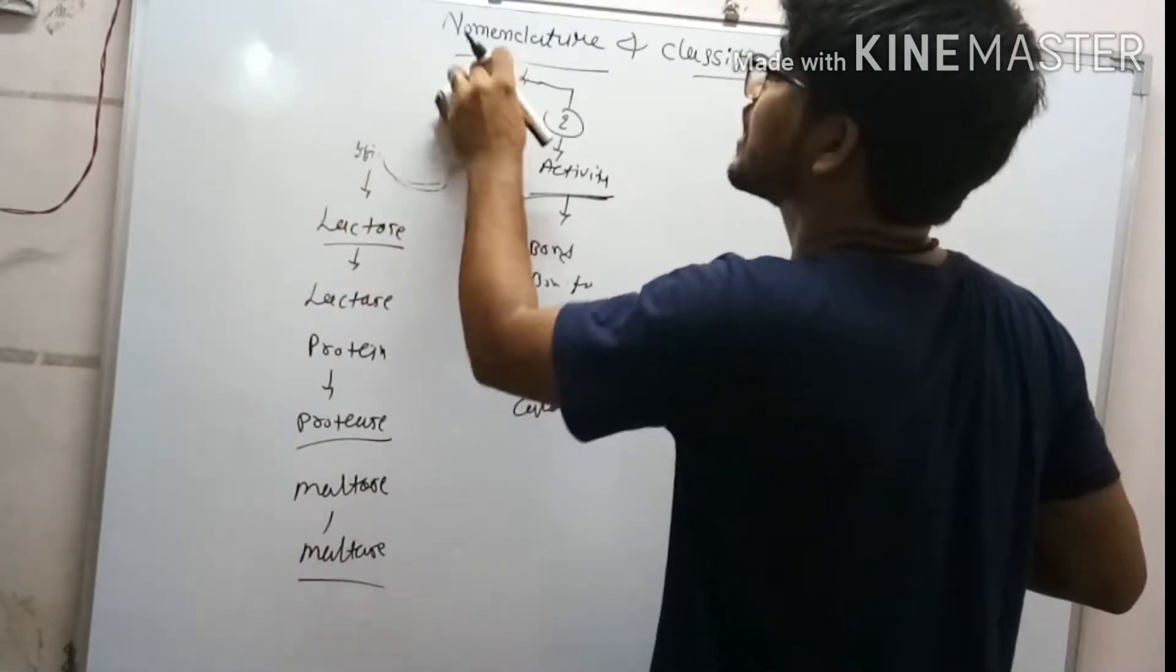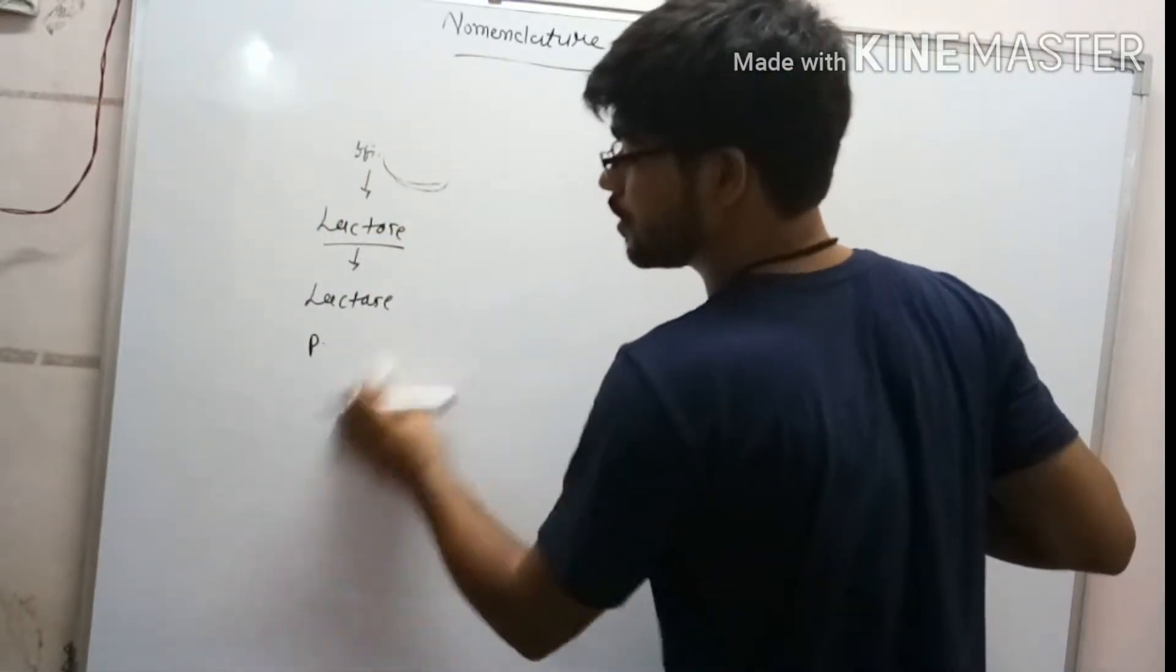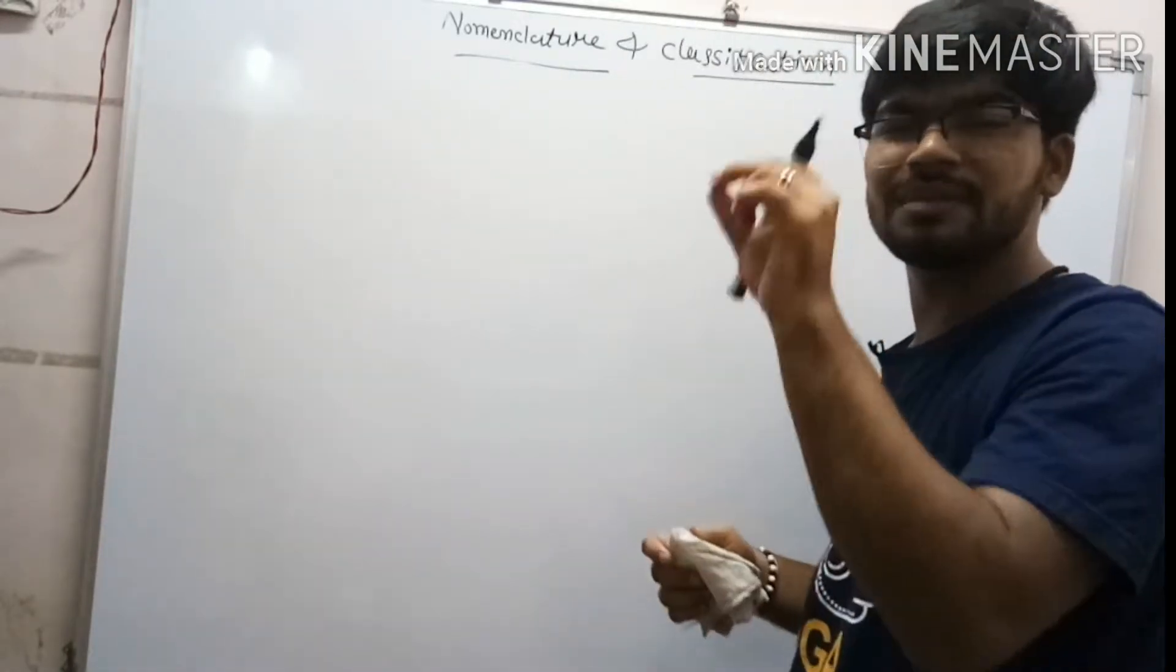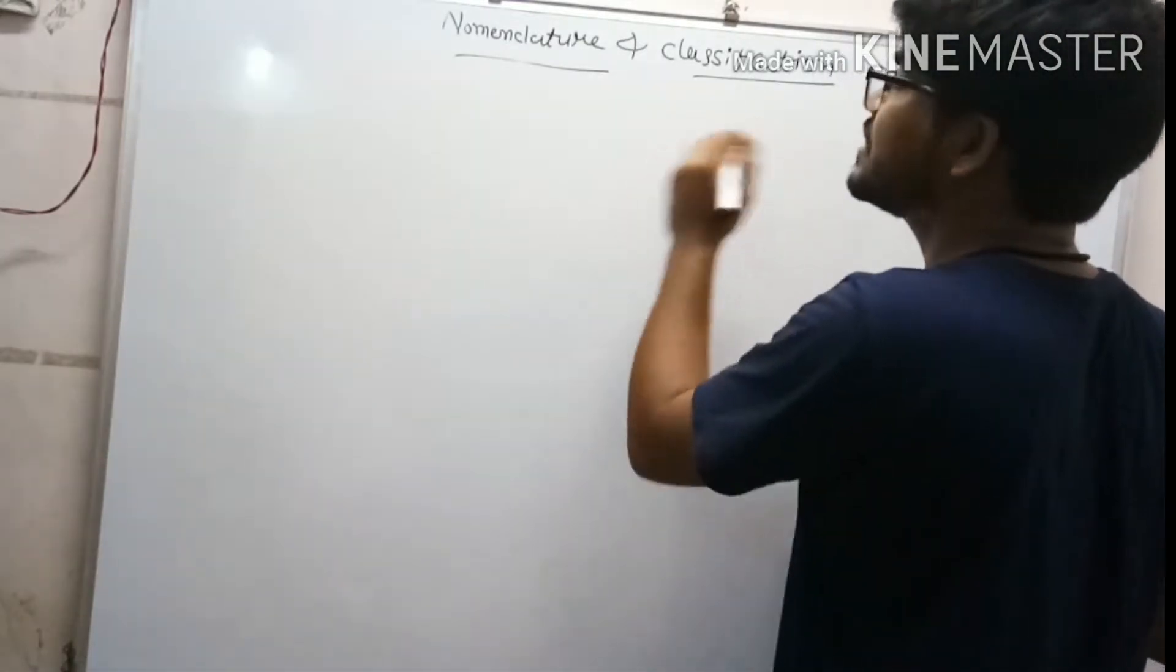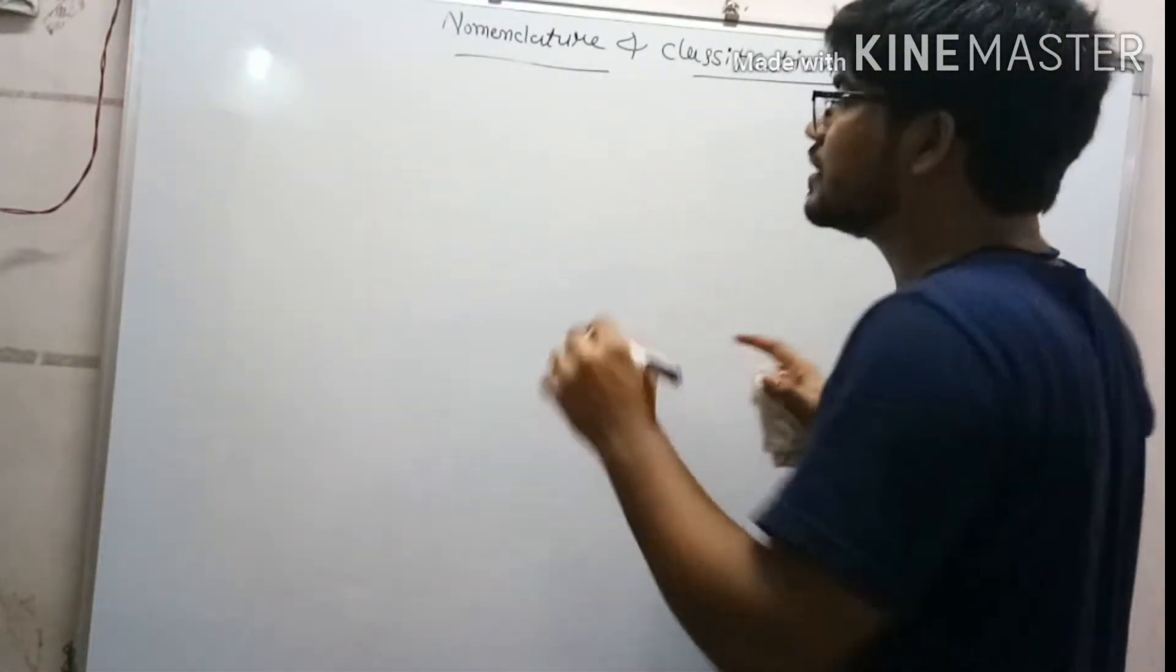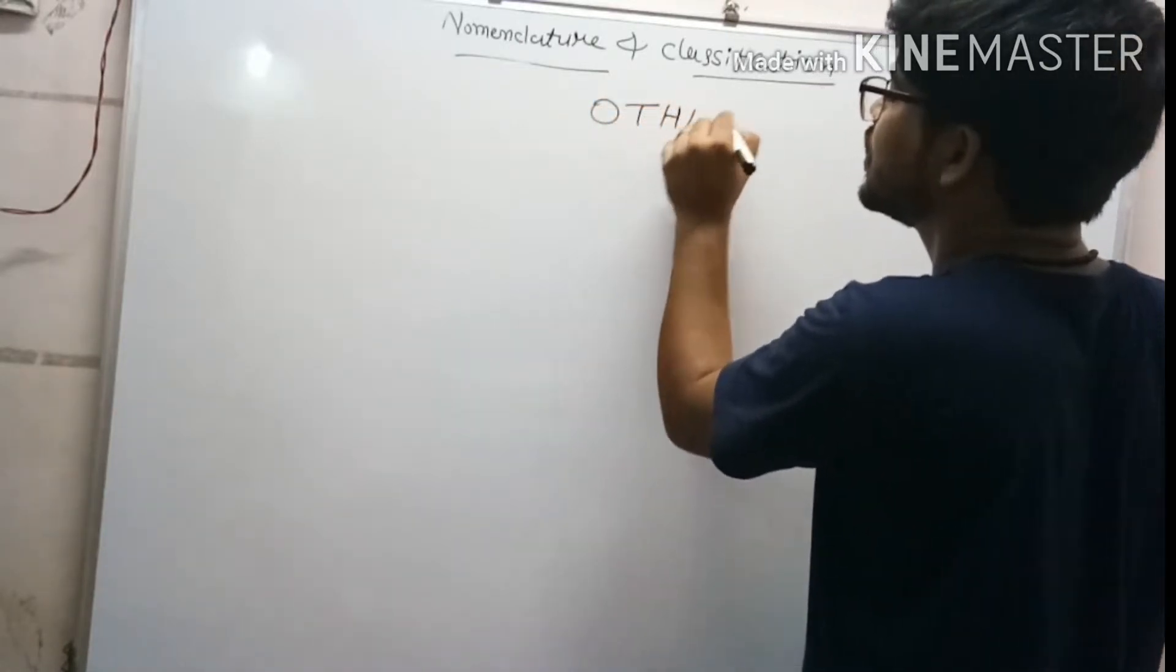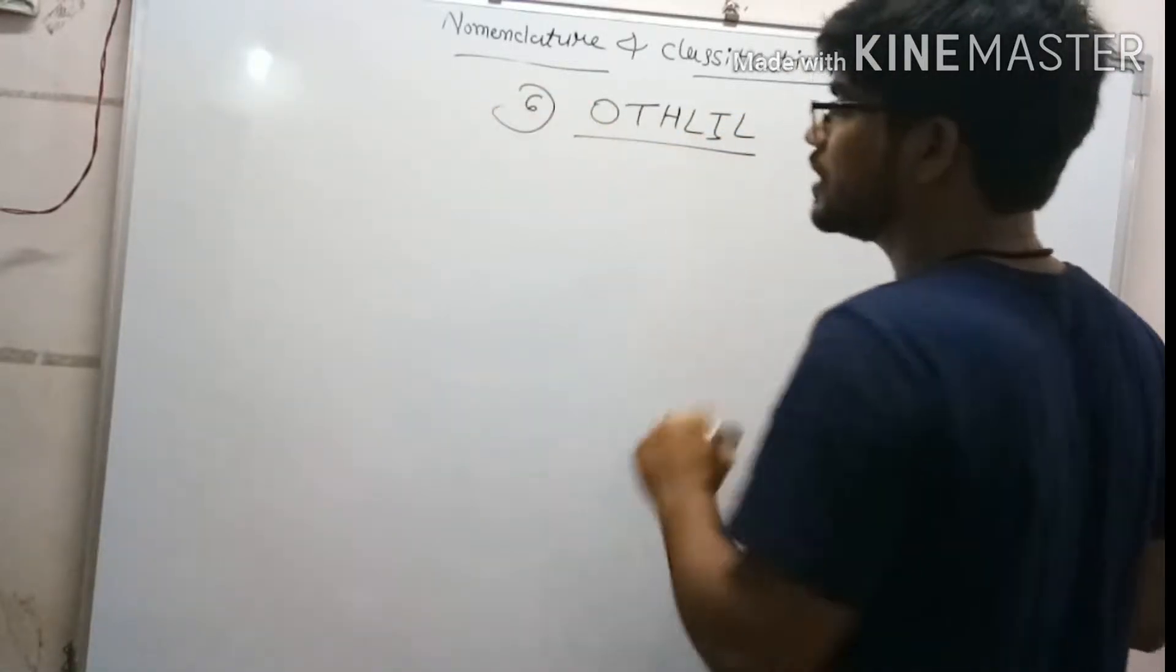Now, let's move on to the classification of enzyme. There are six types of class of enzyme, and also a subclass. Subclass is there by giving the name like dot zero zero zero, gives the subclass. Now, the classification, the best method to remember is OTHLIL, a six letter word OTHLIL.